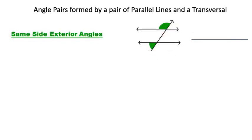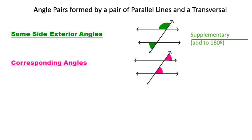We have same side exterior angles. These angles are going to be outside of the parallel lines and on the same side of the transversal — they will be supplementary, with measures adding to 180 degrees. Finally, corresponding angles are going to be congruent. They occupy the same position in a group of four angles, both on the same side of the transversal and both either above or below the parallel lines.